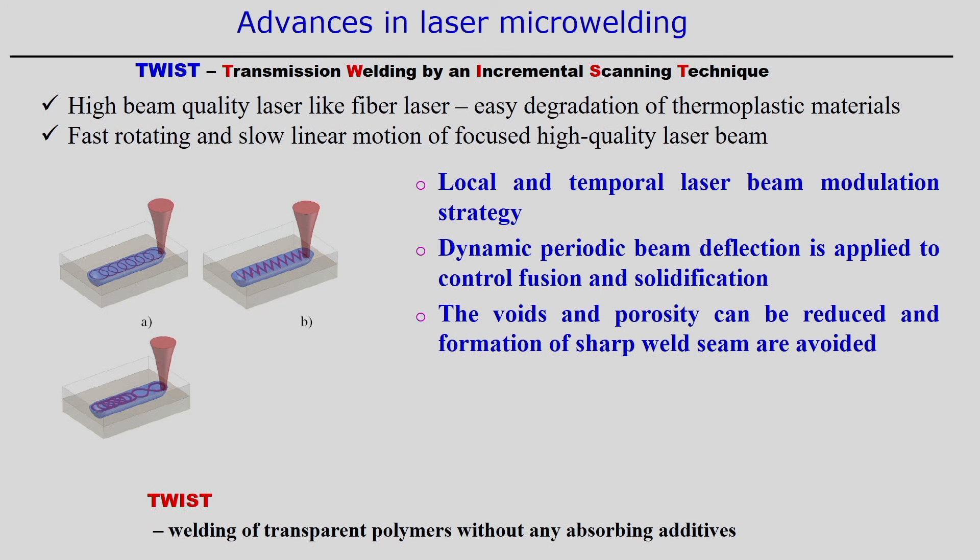Another advancement in laser micro welding is associated with polymeric materials — the TWIST technology, which stands for Transmission Welding by an Incremental Scanning Technique. High-beam-quality fiber lasers may be used, though they can cause easy degradation of thermoplastic materials. TWIST uses fast rotation combined with slow linear motion of the focused laser beam, so the beam follows a zigzag path rather than a single straight line. Both local and temporal laser beam modulation strategies must be adopted, and dynamic periodic beam deflection is applied to control fusion and solidification.